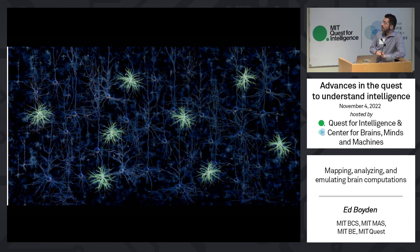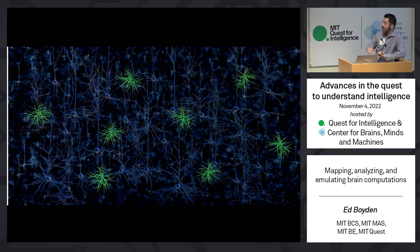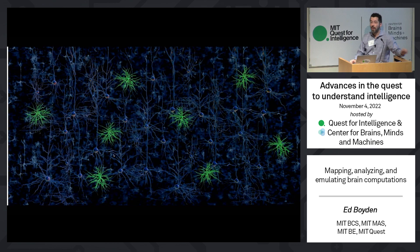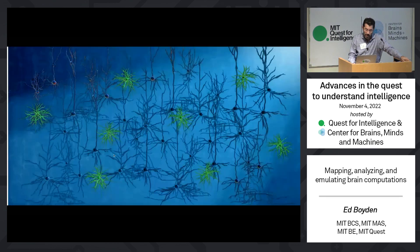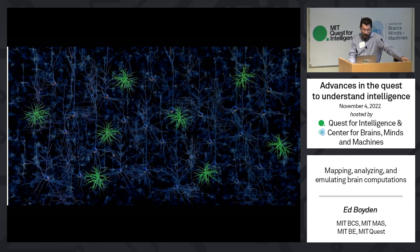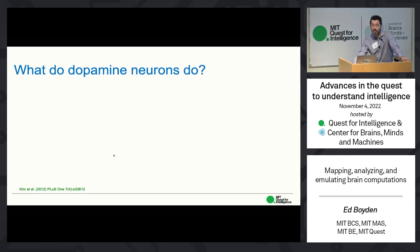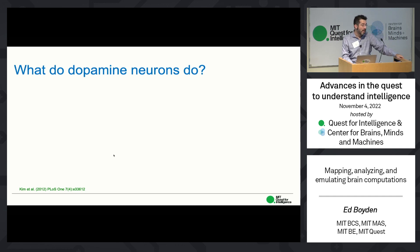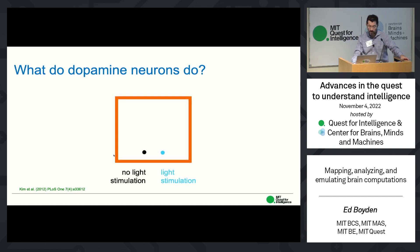You can aim light at a single cell or a set of cells, as shown in this cartoon, and turn those cells on or off depending upon the identity of the molecule. This strategy is being very widely used throughout neuroscience to activate and silence brain cells and figure out how they initiate, sustain, or are needed for different kinds of behavior.